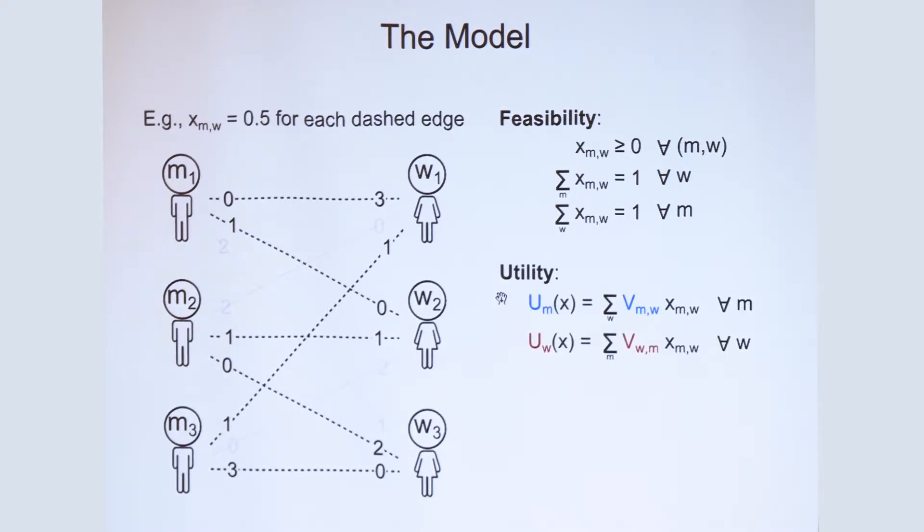We assume that agents have linear utilities, meaning the utility of any agent is the sum of the matching weights that it is part of, which are scaled by the valuations. So for this particular matching, the utility of W1 is three times a half plus one times a half, which is two.